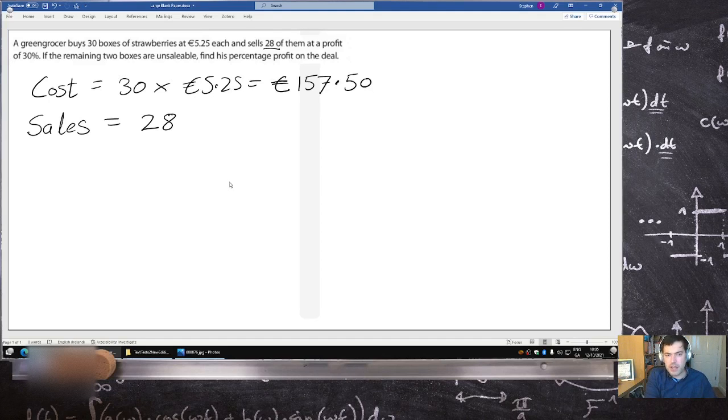We don't know how much they were sold for. All we know is that the profit of 30% was made. So let's figure this out. Let's figure out what each one was sold for.